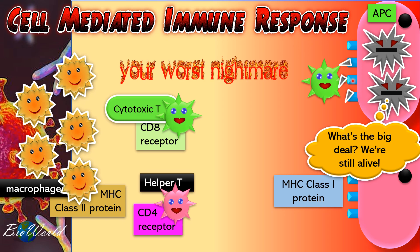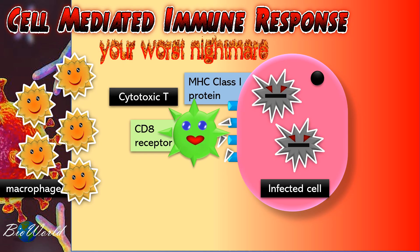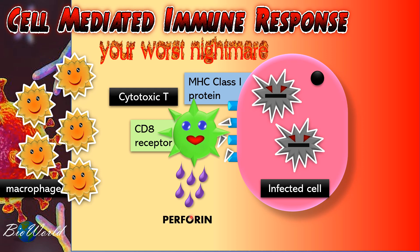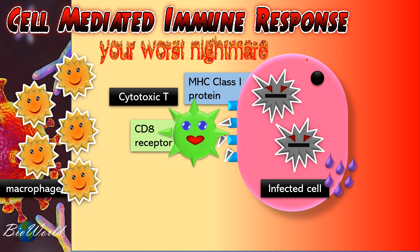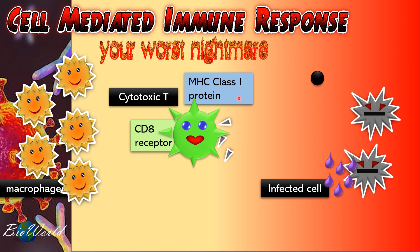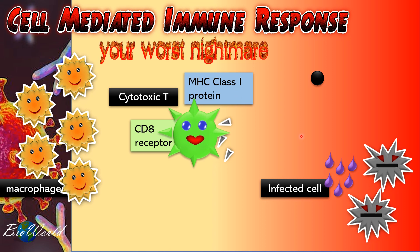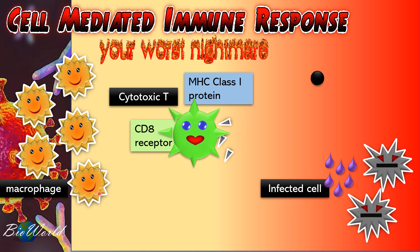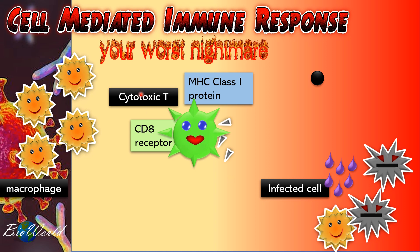Once the cytotoxic T binds to the infected cell, cytotoxic T is stimulated to synthesize a protein called perforin. The function of perforin is to perforate the plasma membrane of the infected cell. Tiny pores will form on the surface of the plasma membrane and this will cause the infected cell to lyse. The disadvantage is that the cell is destroyed, but the advantage is that the pathogens now have no place to hide and become exposed in the body fluids. The macrophage can now identify these pathogens, engulf and digest them.